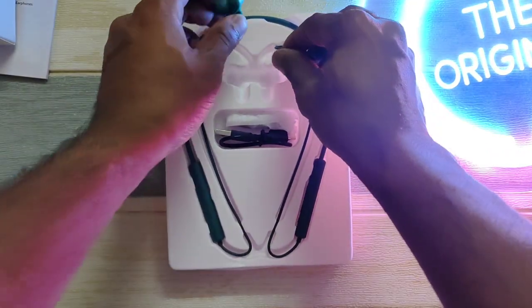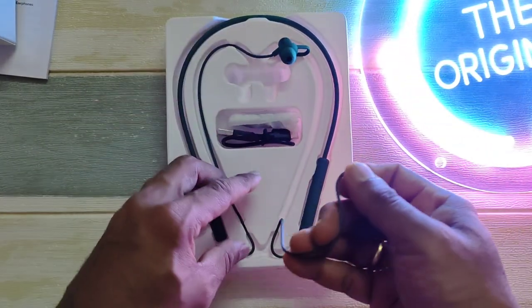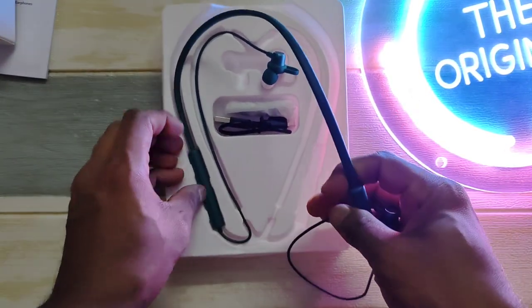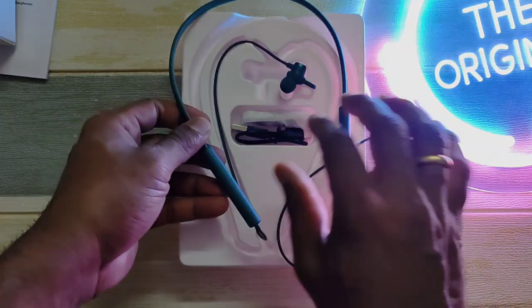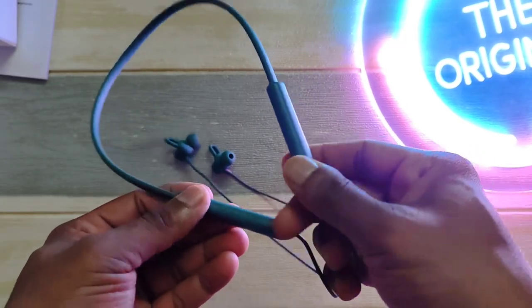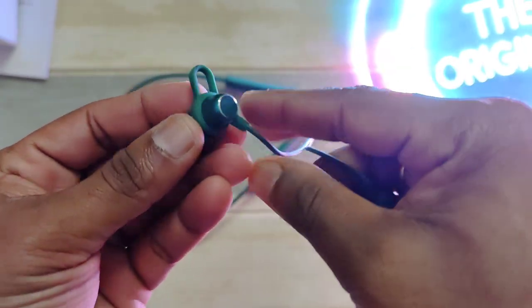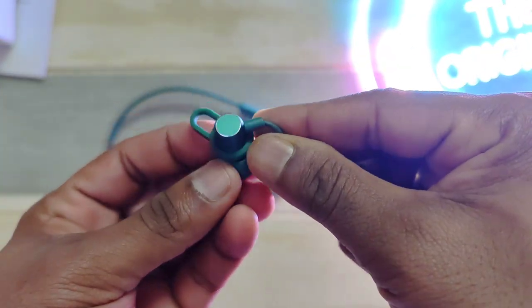So we're just going to take them out. As you can see, this is magnetically connected. So if you want to wear around your neck, you can have them secure in place without them falling off. So this is the Nokia E1502. You can see the beautiful green color it has here. So I'm just going to show you around how it looks and how it actually feels.